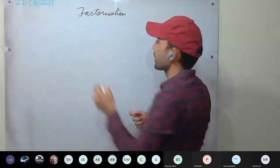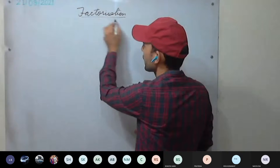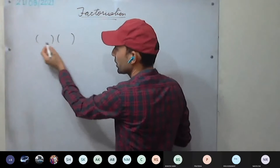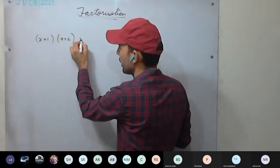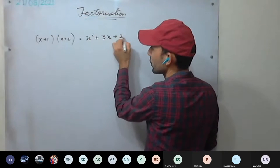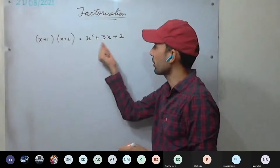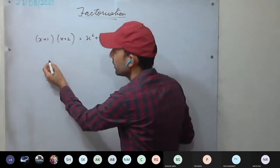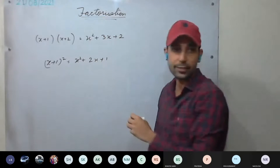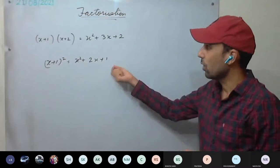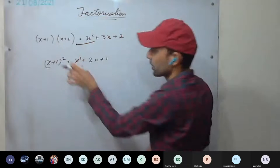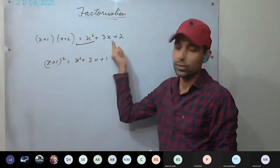We are starting a new chapter: factorization. Till now in the previous chapter, we multiplied two expressions like (x+1) or (x+2) and got results. Now, for example, x² + 3x + 2 was the answer we got by multiplying two expressions. This time, we'll be taking the reverse of multiplication — that is, we'll be finding the factors: what should we multiply with what to get this result.